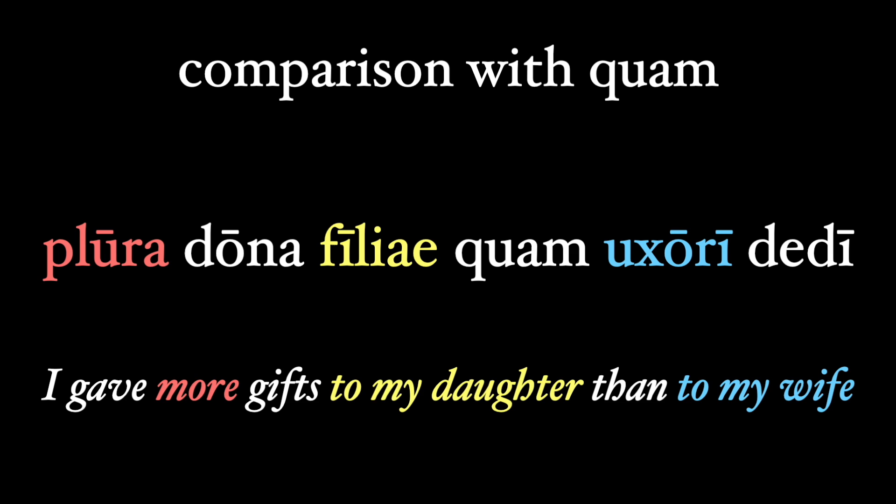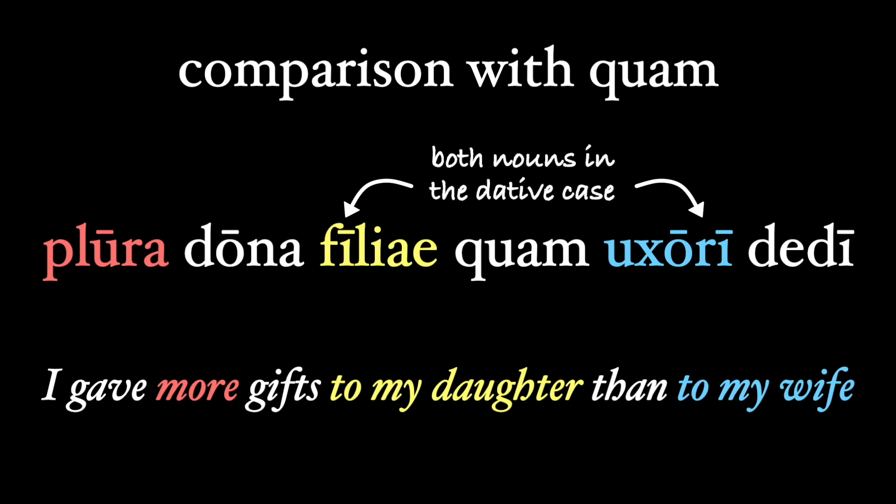I gave more gifts to my daughter than to my wife: plura dona filiae quam uxori dedi. Here we are comparing the two dative case nouns, filiae and uxori. Quam allows us to write a sentence like this, where the words we're comparing are in the dative case.